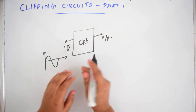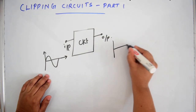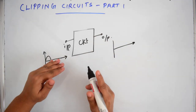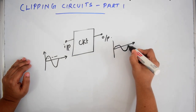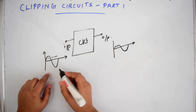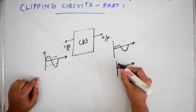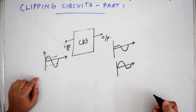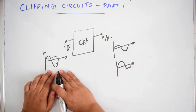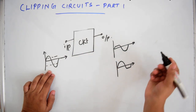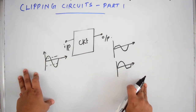This is the clipping circuit. What does it do to the input wave? A portion of the input wave will be clipped off — it may be the positive portion or sometimes the negative half cycle. Without damaging the rest of the wave, a particular portion will be clipped off or removed. This is the function of a clipping circuit.